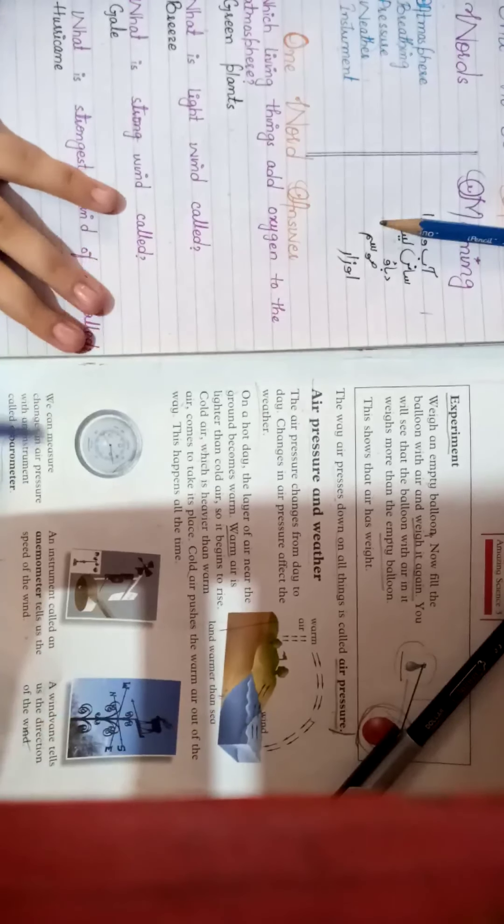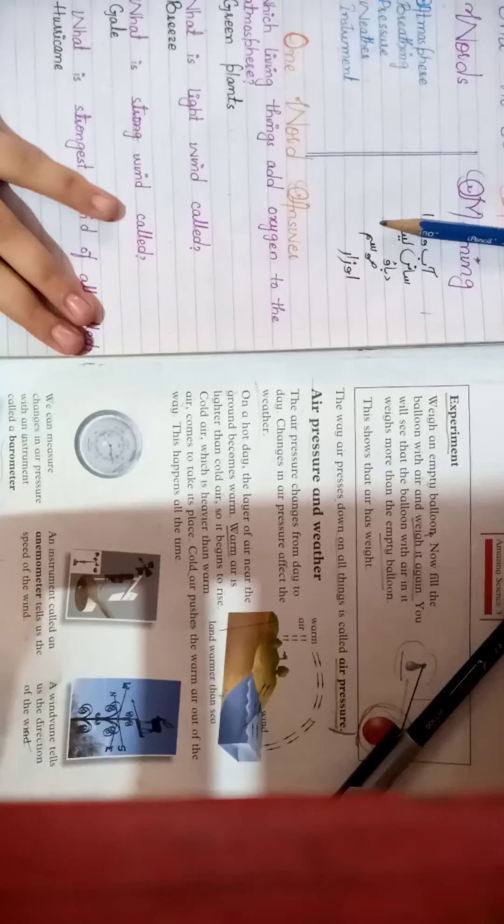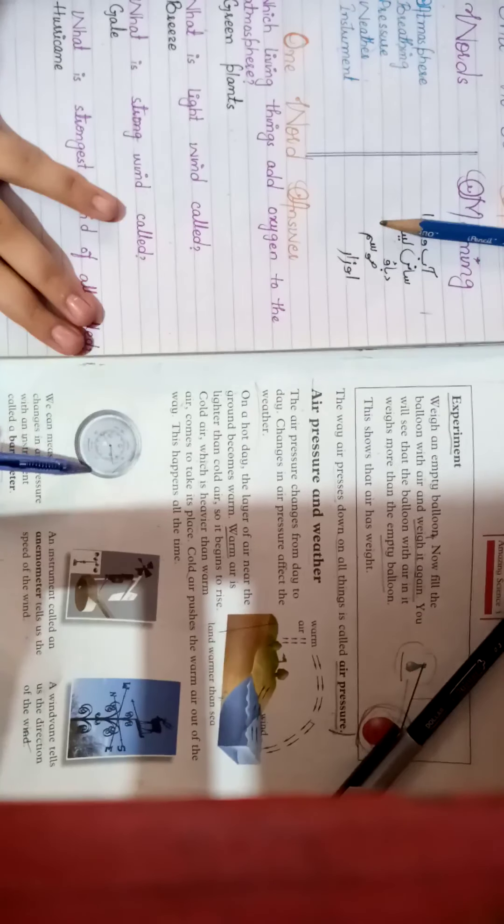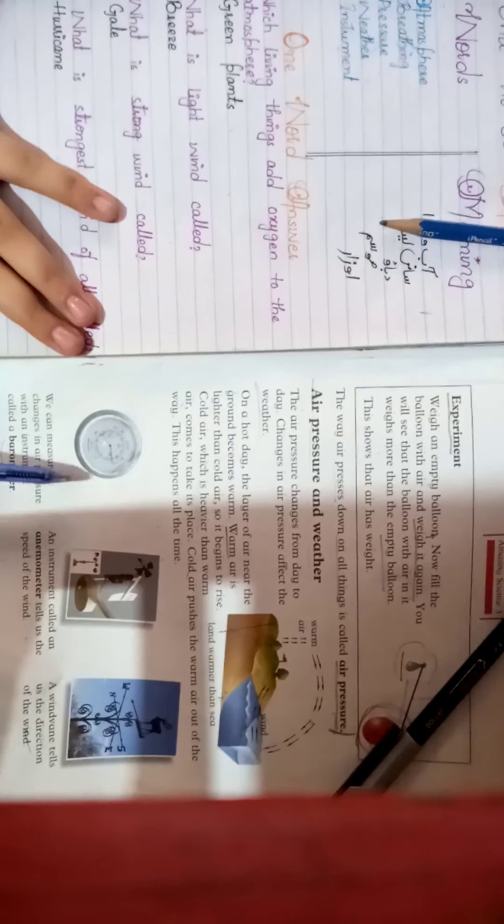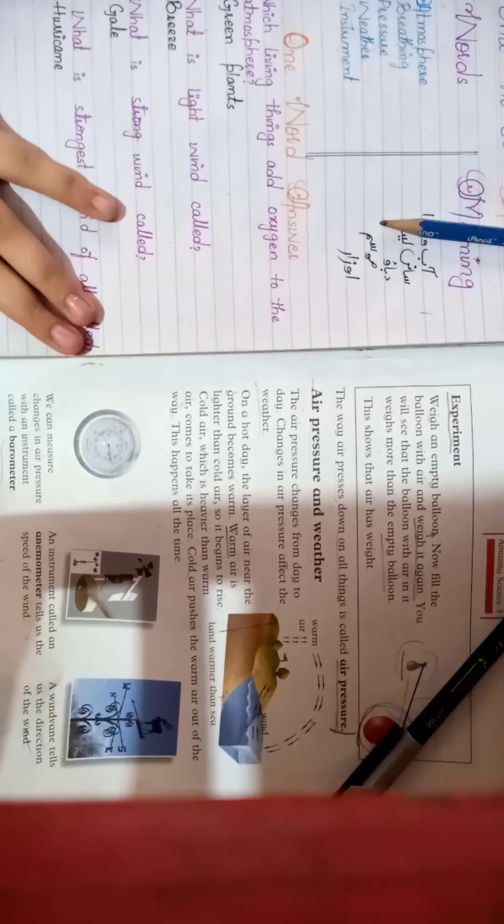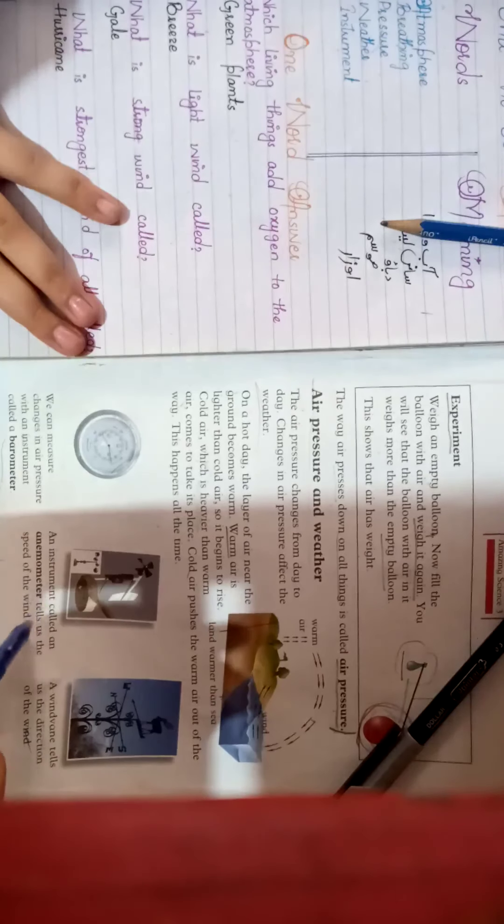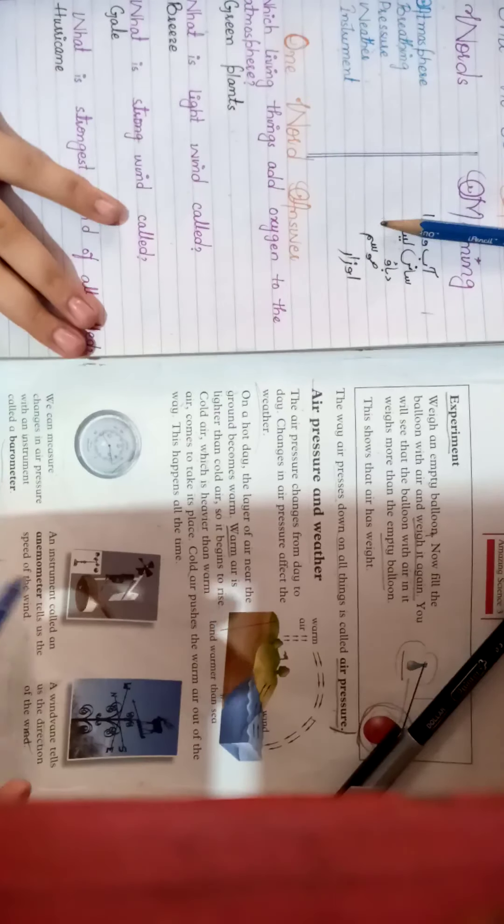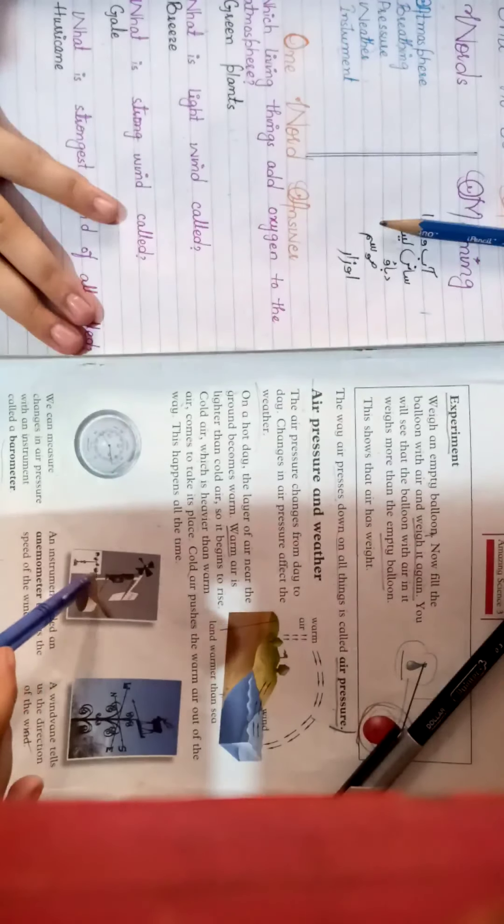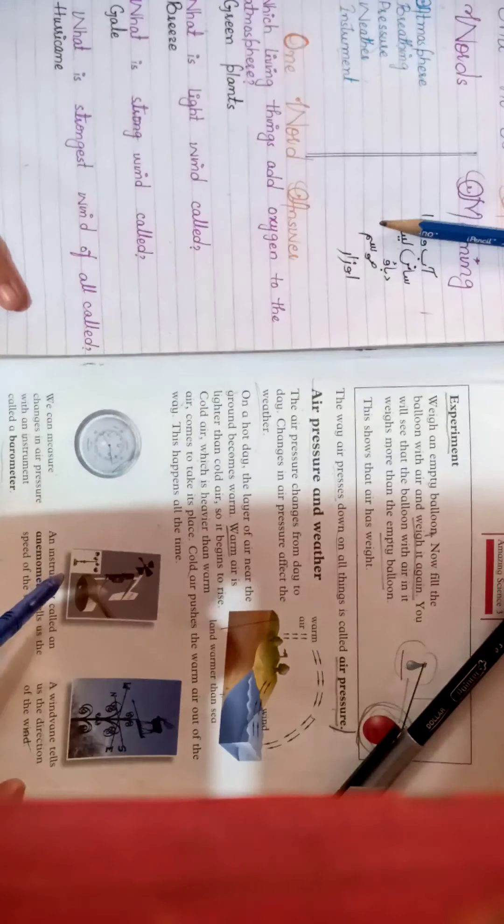Now, we can measure the changes in air pressure. This instrument is called a barometer. This measures changes in air pressure. An instrument called an anemometer measures the speed of wind. This instrument is called an anemometer. This measures wind and wind speed.